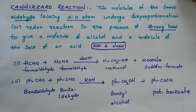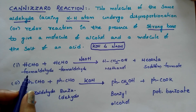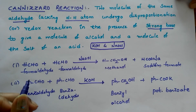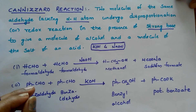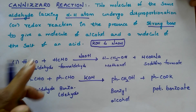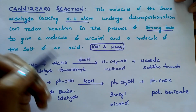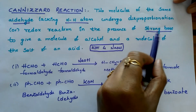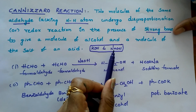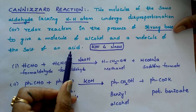Hi students. In today's class I am going to explain the Cannizzaro reaction, which is one of the important named reactions in organic chemistry. In the Cannizzaro reaction, generally two molecules of an aldehyde which do not have any alpha hydrogen atoms undergo this reaction in the presence of a strong base like potassium hydroxide or sodium hydroxide, and they form an alcohol and a salt of an acid.